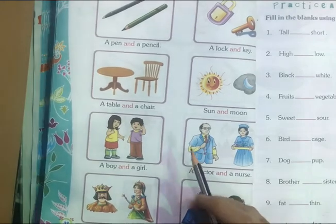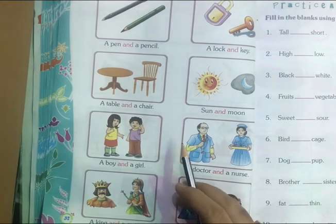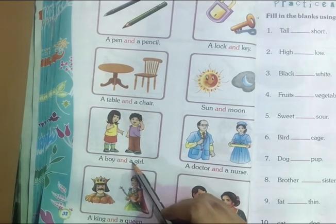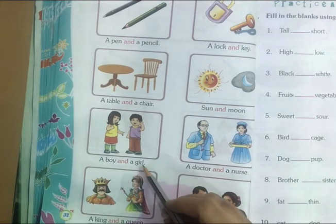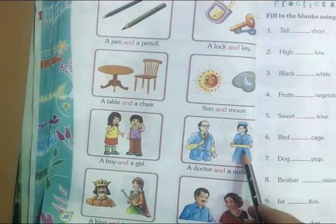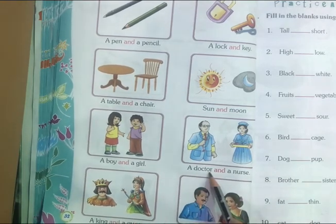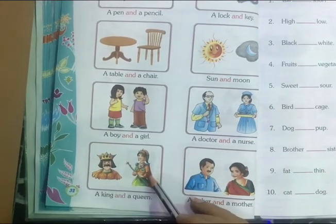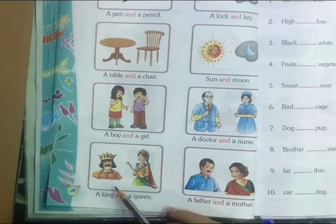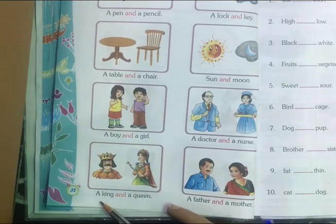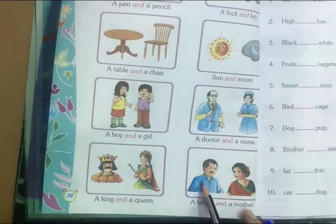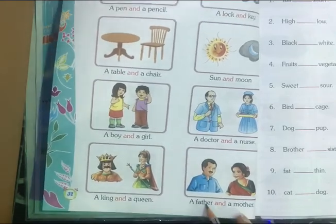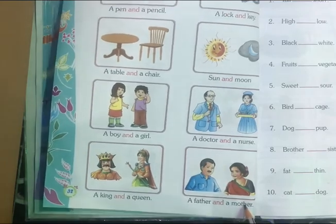So how can we join two words? We use AND. A boy and a girl. A boy and a girl. A doctor and a nurse. A doctor and a nurse. A king and a queen. A king and a queen. A father and a mother. A father and a mother. Clear?